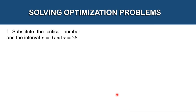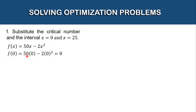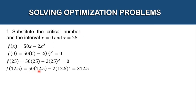Now we substitute the critical number and the interval endpoints — x = 0 and x = 25 — into our function f(x) = 50x - 2x². f(0) = 50(0) - 2(0)² = 0. f(25) = 50(25) - 2(25)² = 0. f(12.5) = 50(12.5) - 2(12.5)² = 312.5.